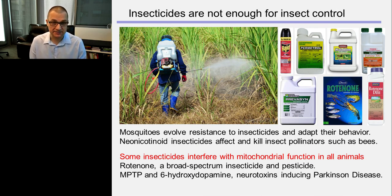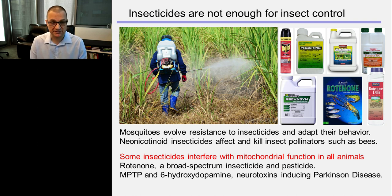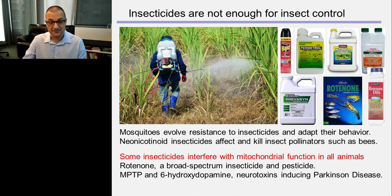Traditionally, insecticides and larvacides are used for all insect control, including mosquitoes. The big problem is that insecticides, like a nuclear bomb, kill all different kinds of mosquitoes completely indiscriminately. Mosquitoes also very rapidly evolve resistance to particular insecticides and adapt their behavior to minimize contact with them. Insecticides kill other insects too — for example, neonicotinoid insecticides kill pollinators such as honeybees, and neonicotinoids have recently been prohibited in Europe.